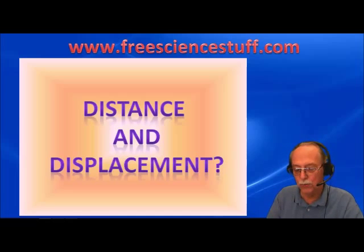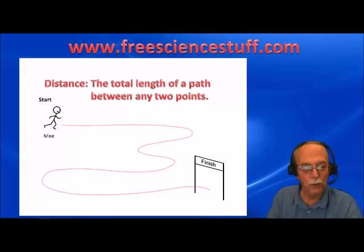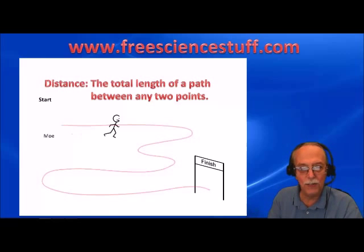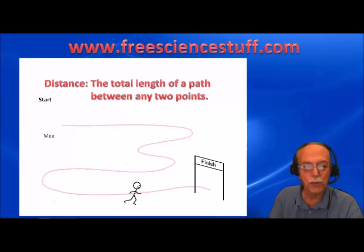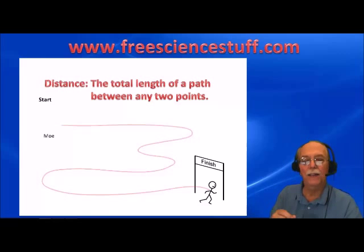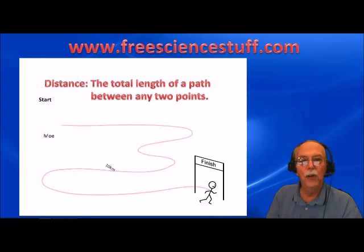Let's get a really good understanding of the difference between distance and displacement by looking at a road race. Remember that distance is the total length of a path between two points. Here's my buddy Mo — he's going to run a race along this prescribed curved path. When he gets to the finish line, the distance he traveled was 10 kilometers. It's a 10K road race.